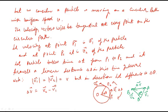When the particle is at point P1, the velocity vector v1 is tangential to it. When the particle is at point P2, the velocity vector v2 is tangential to it. When the particle travels from P1 to P2, it takes a time interval delta t, travels a linear distance delta s, and the angular displacement is delta theta. As the particle moves with uniform speed, the magnitude of v1 equals v2 equals v.